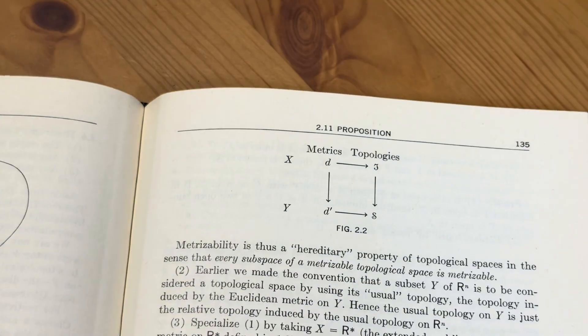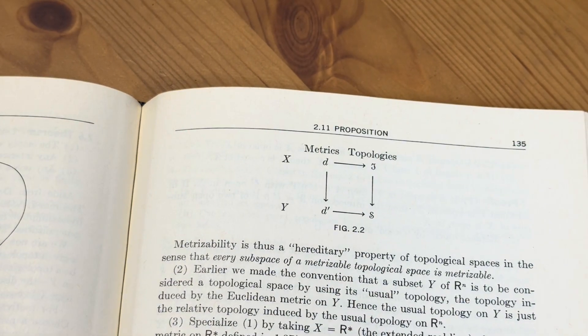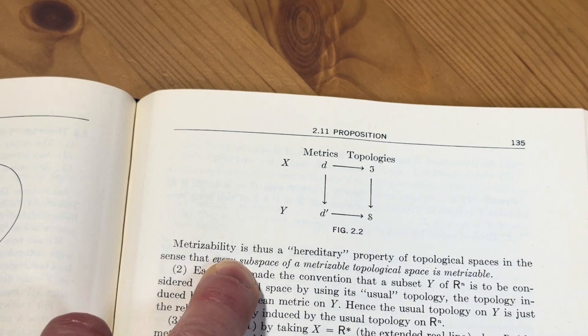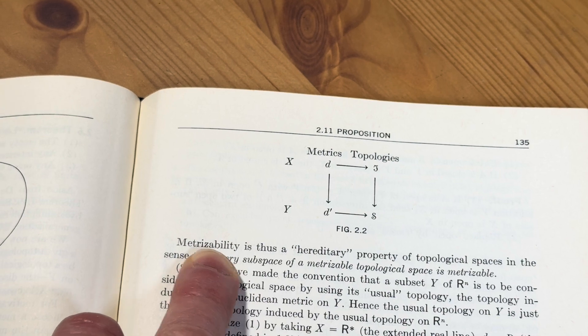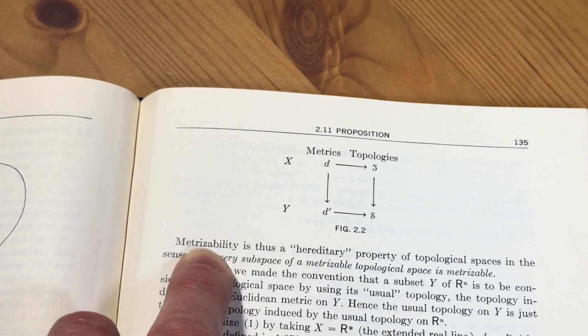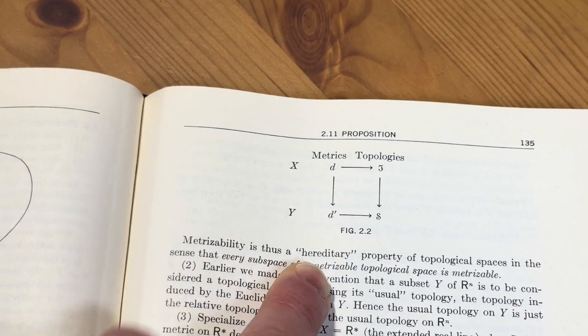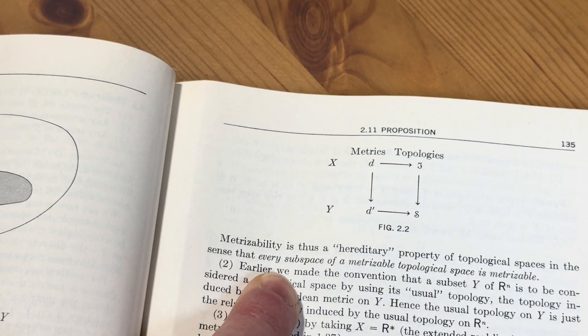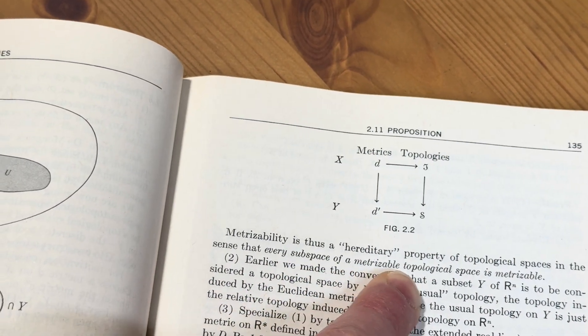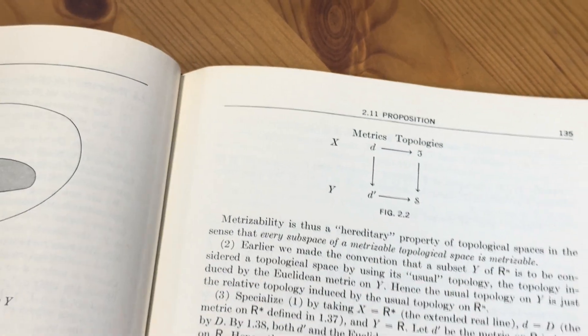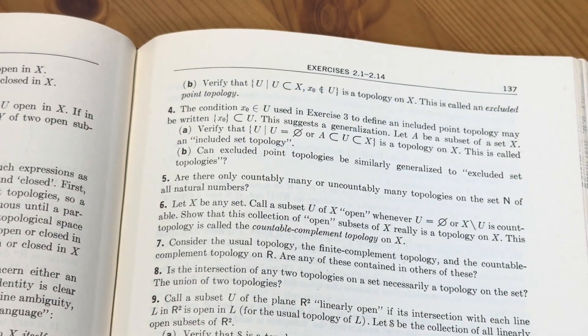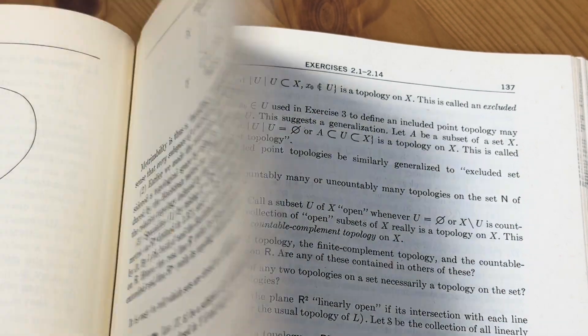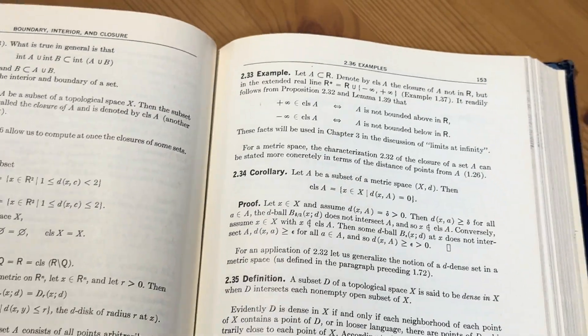So kind of cool. Some metric topologies here. It's a hard word to say. Metrizability. Metrizability. I can never say it. Is thus a metrizability or metrizability? I can never say it right. I'm not sure how to say it. Is thus a hereditary property of topological spaces in the sense that every subspace of a metrizable topological space is metrizable. I think it's metrizable. Metrizable. Not sure. Not sure how to say that one.